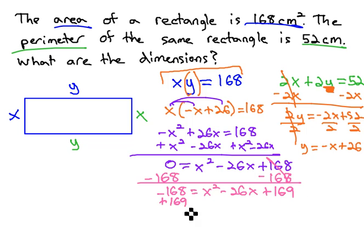So, we'll add 169 to both sides, which leaves us with 1 on the left side. And on the right side, we have a perfect square, x minus 13.